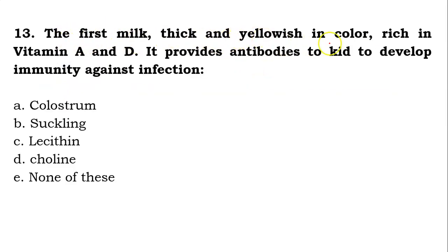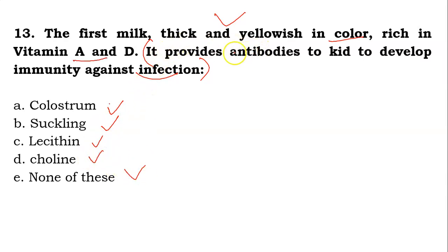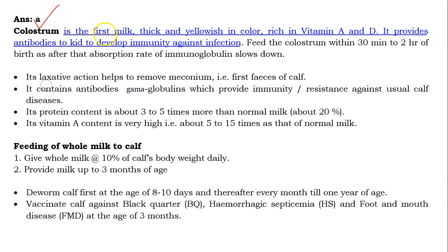The thirteenth question: the first milk, thick and yellowish in color, rich in vitamins A and D, which provides antibodies to kids to develop immunity against infection — identify it. Options are Colostrum, Suckling, Lecithin, Choline, or None of these. The answer is A — Colostrum. Colostrum is the first milk, thick and yellowish in color, rich in vitamins A and D. It provides antibodies to the kids. Feed colostrum within 30 minutes to 2 hours of birth, as after this the absorption rate of immunoglobulin slows down.